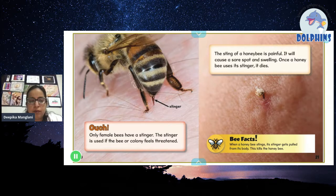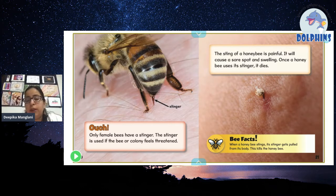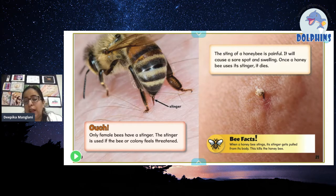Stinger — ouch! Only female bees have a stinger. The stinger is used if the bee or colony feels threatened. The sting of a honeybee is painful — it will cause a sore spot and swelling. Once a honeybee uses its stinger, it dies. I still remember a honeybee got into my room at night and stung me at 2 o'clock while I was sleeping. It was so painful. And yes, as we said — once the stinger is used, she will die.